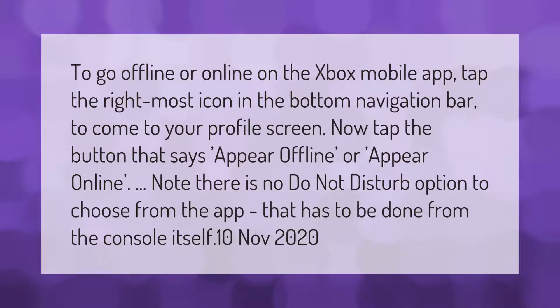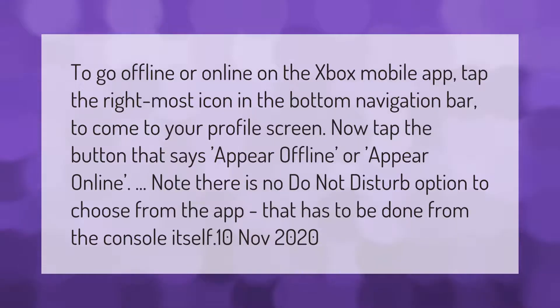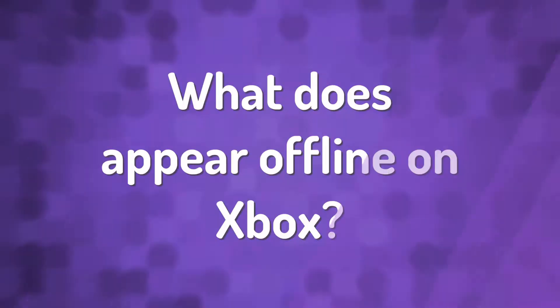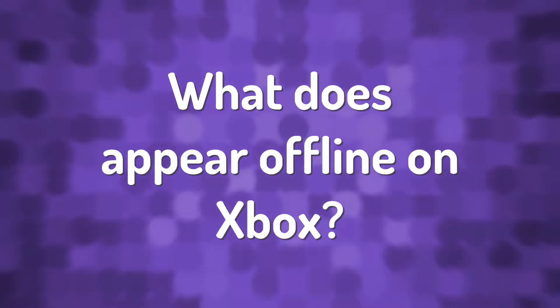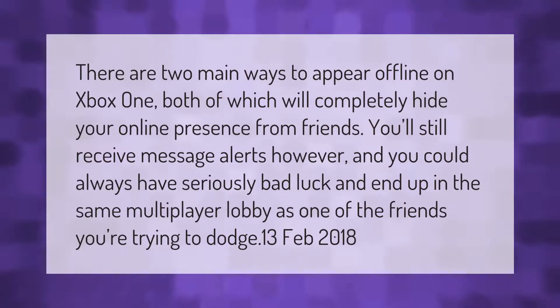To go offline or online on the Xbox mobile app, tap the rightmost icon in the bottom navigation bar to reach your profile screen. Tap the button that says 'Appear Offline' or 'Appear Online.' Note: there is no 'Do Not Disturb' option in the app — that has to be done from the console itself.